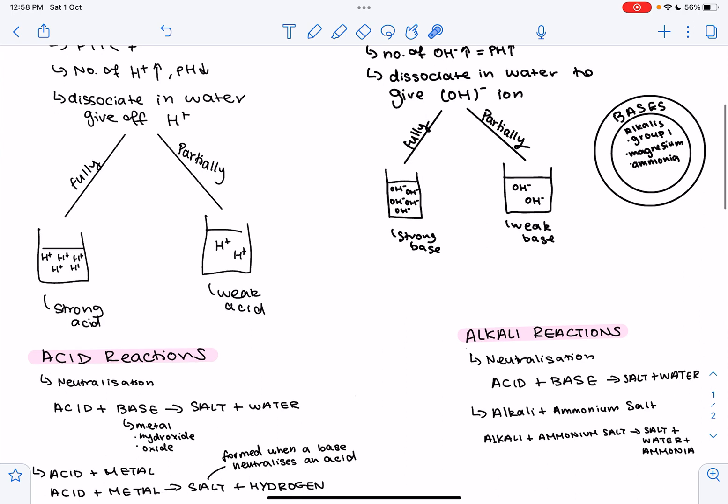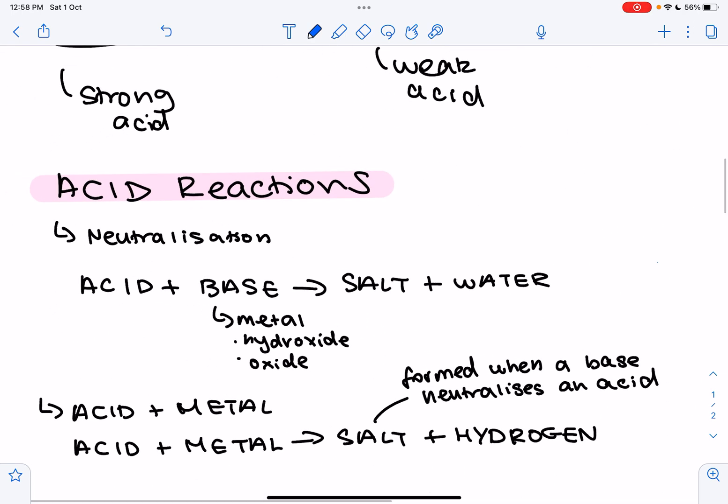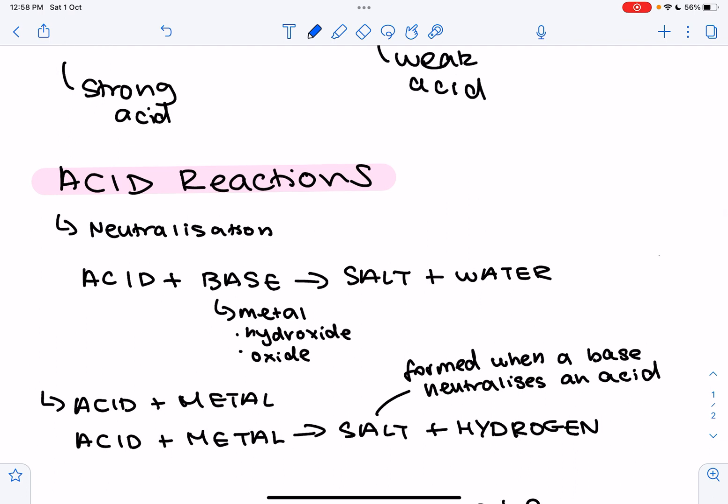So now let's look at some acid-base reactions. First reaction, which happens both as an acid and a base, is the neutralization reaction. So this is when an acid plus a base, so the base could be like a metal hydroxide or a metal oxide, forms a salt plus water. So what is a salt? A salt is formed when a base neutralizes an acid.